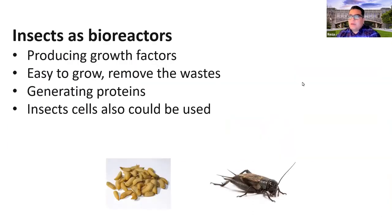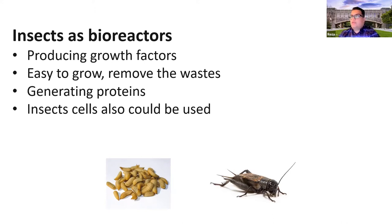People have also started thinking about using insects as another type of bioreactor. They can easily produce growth factors, they are easy to grow, they can remove solid waste material, and they can generate protein that could be used by people in space. Insect cells, which are pretty easy compared to other cell types to produce, can also be engineered to produce growth factors — providing another system to use along with cell-based meat, to reduce waste, produce growth factors, and produce more protein.